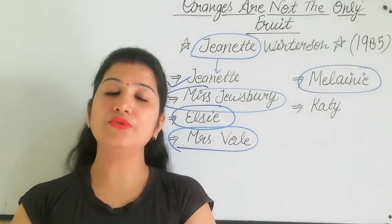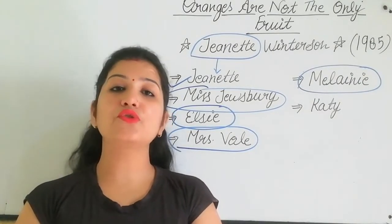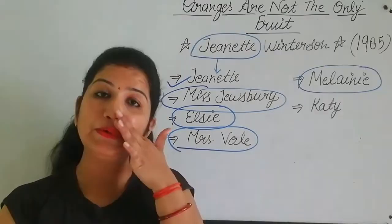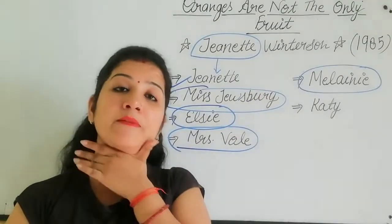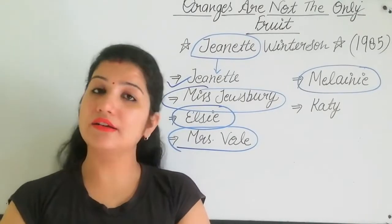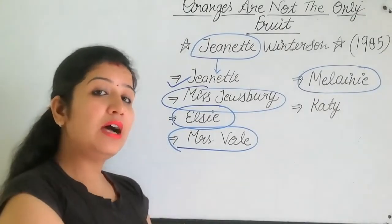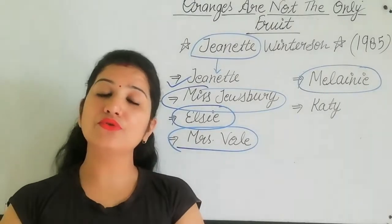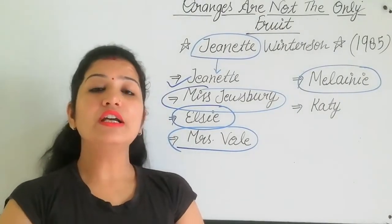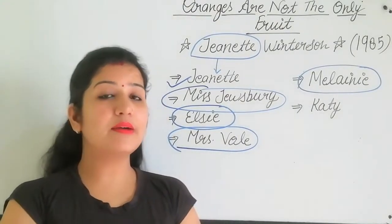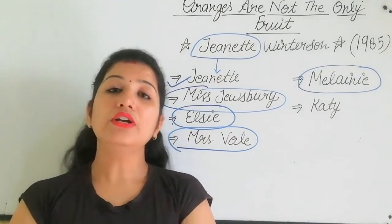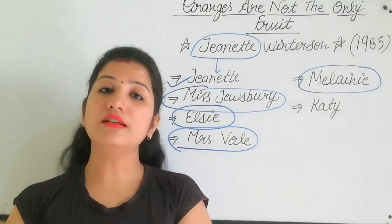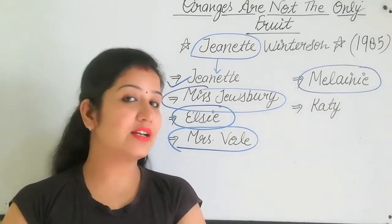When Melanie goes to the church for the first time, Janet tells her about God — how to be saved and how to serve. Melanie agrees with her. Now Melanie and Janet grow close through the church and meet each other regularly. Janet goes to Melanie's house, they read the Bible together, and they develop a physical relationship.